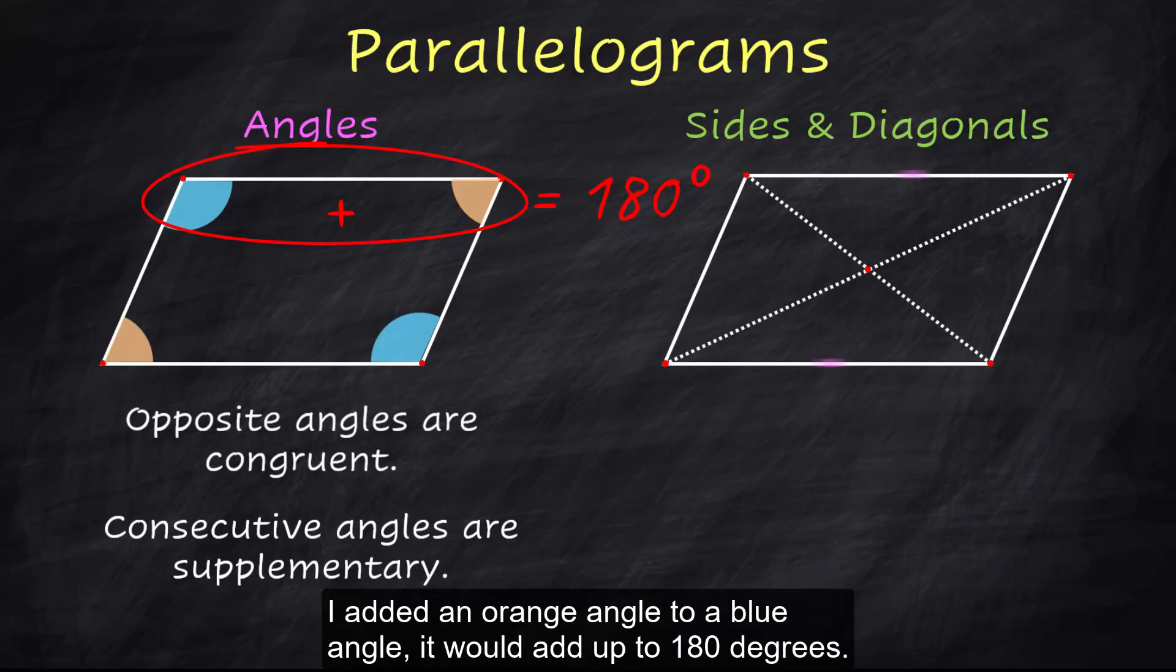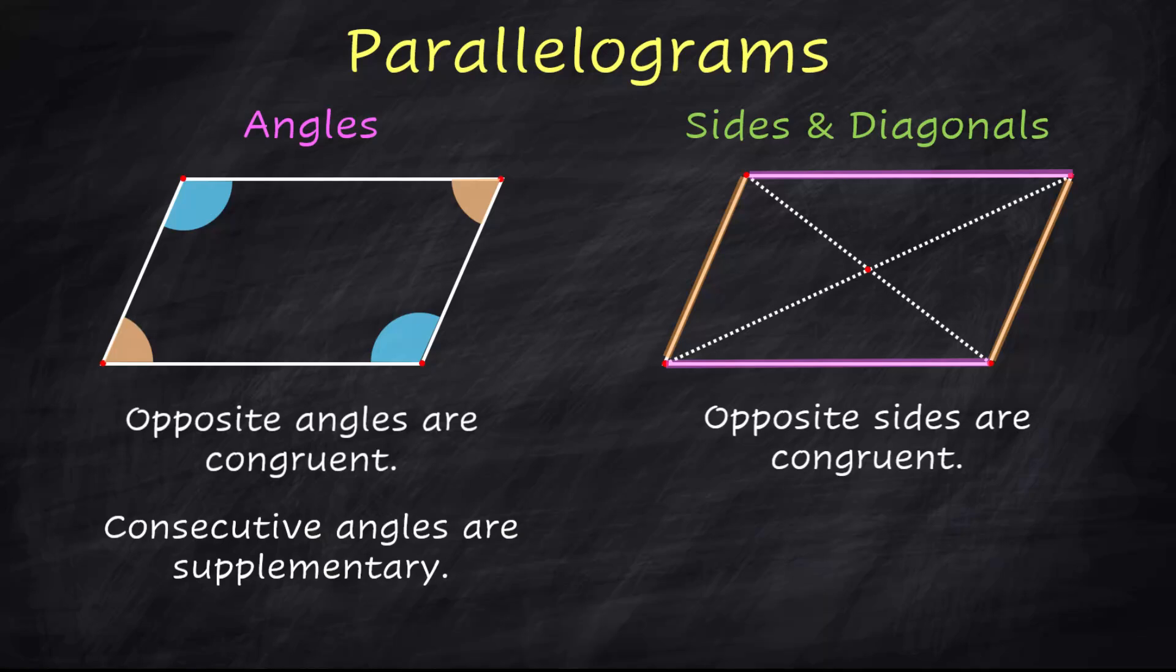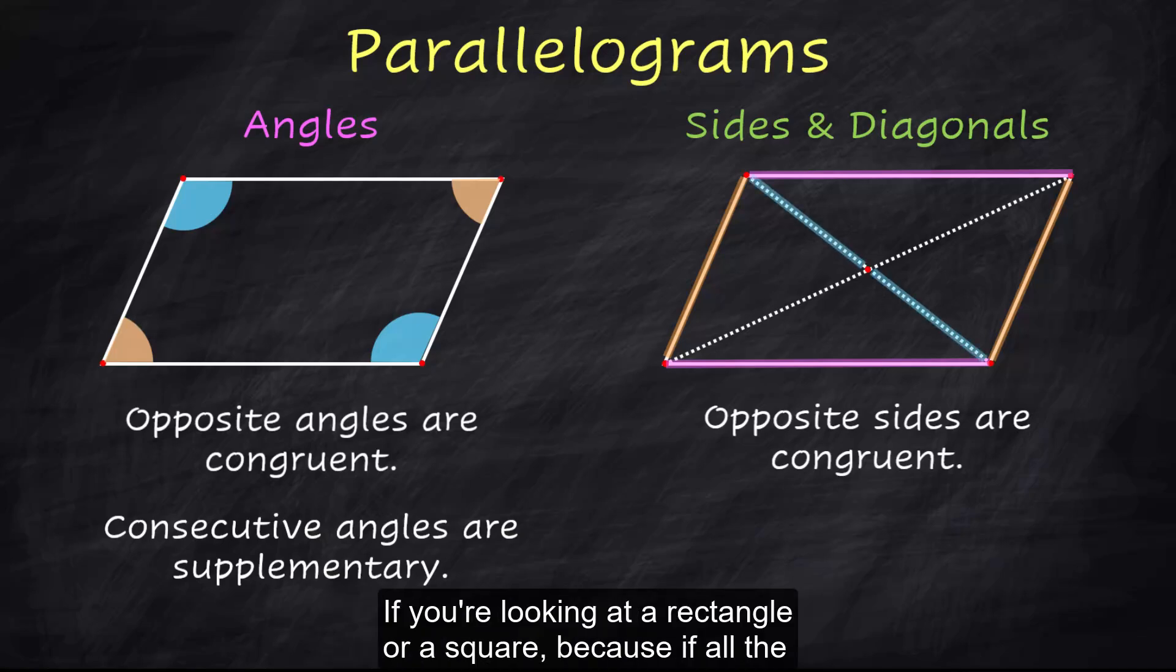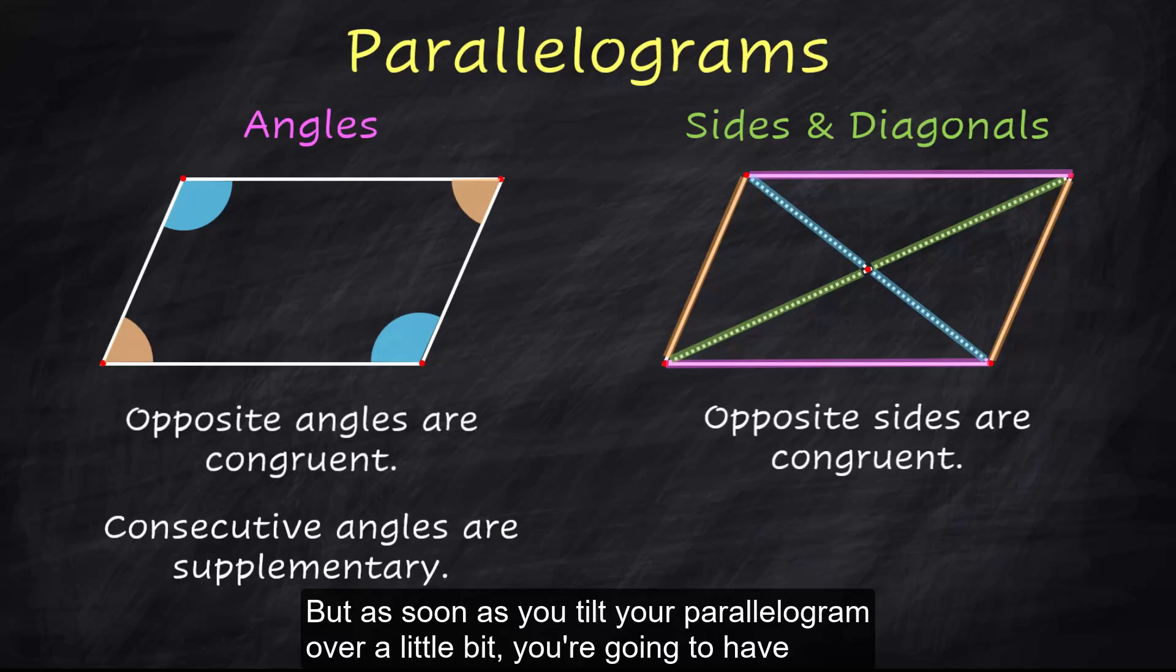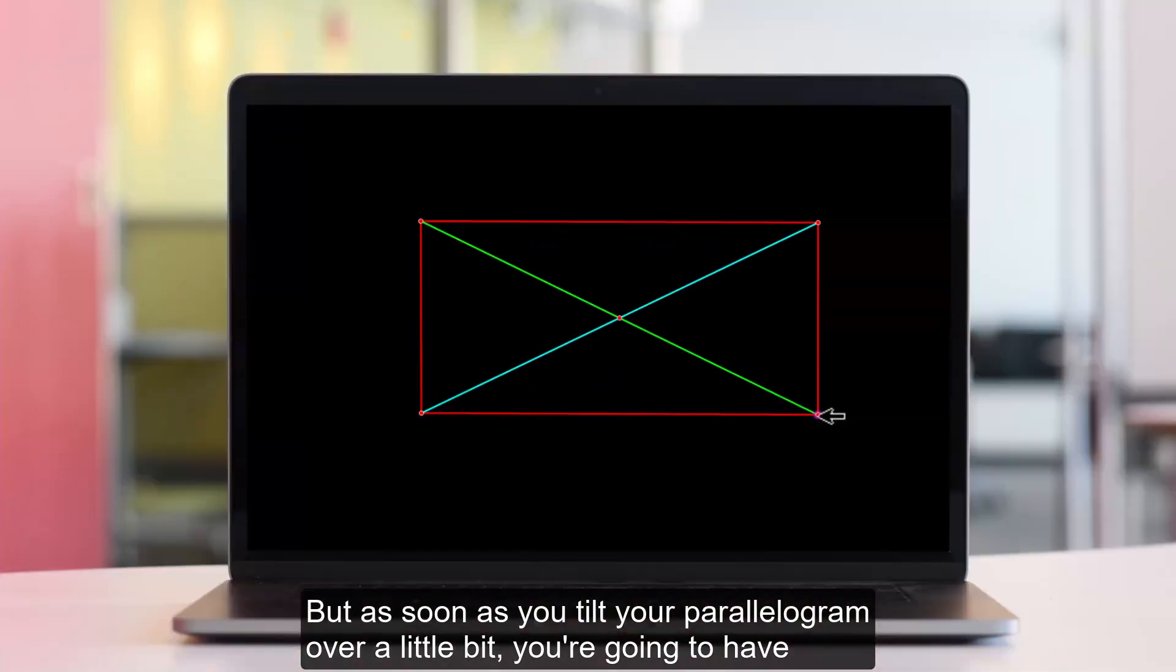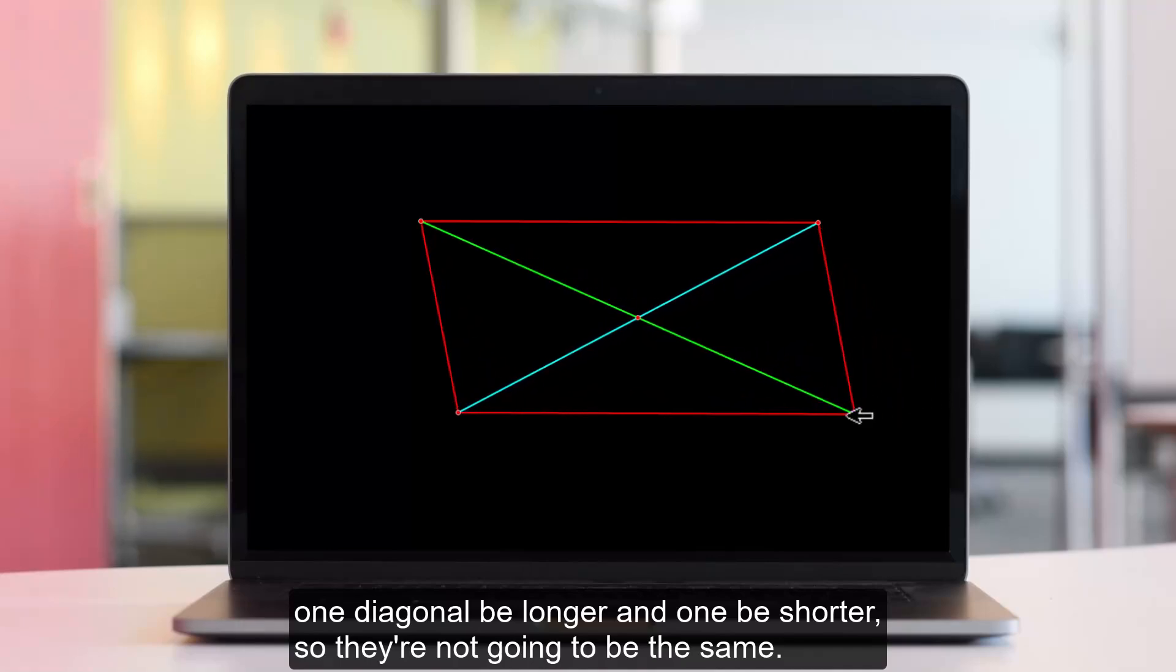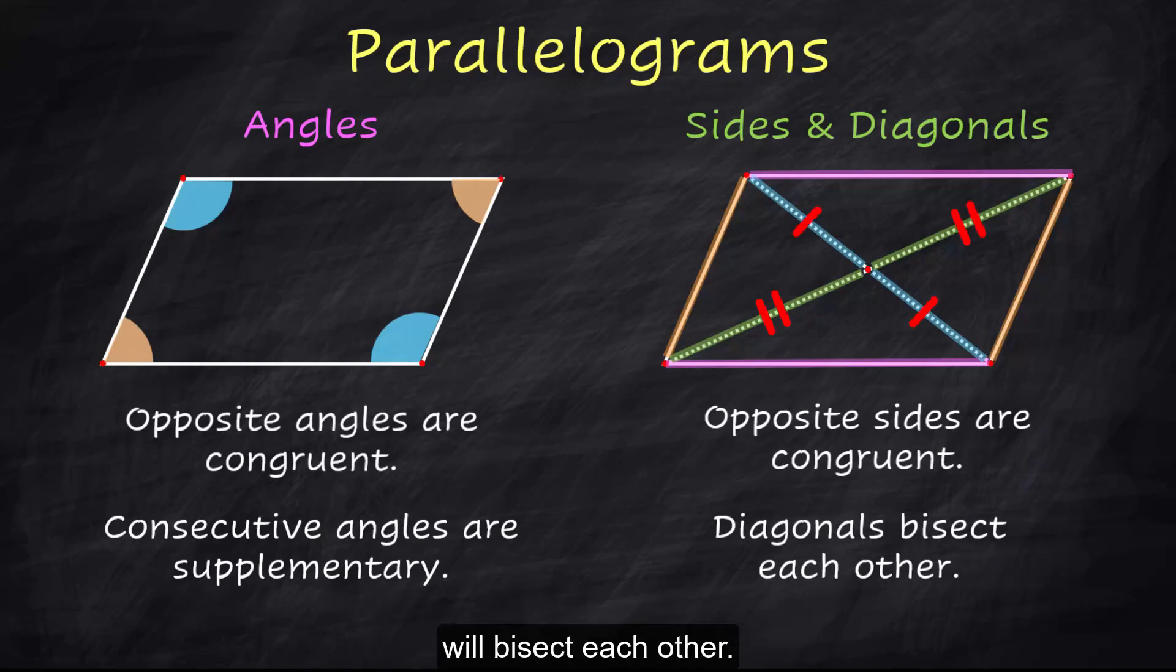Opposite sides in a parallelogram are also congruent. You'd want the diagonals to be congruent and sometimes they are. If you're looking at a rectangle or a square because if all the angles are 90 degrees then the diagonals are going to be the same but as soon as you tilt your parallelogram over a little bit you're going to have one diagonal be longer and one be shorter so they're not going to be the same but they do have an interesting property in that they actually will bisect each other.